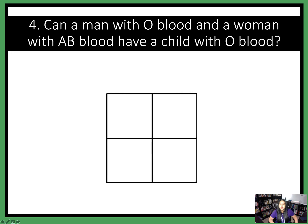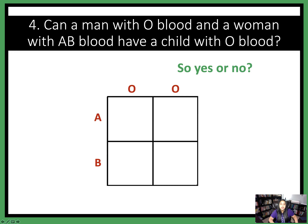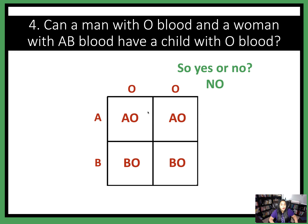Number four: can a man with O blood and a woman with AB blood have a child with O blood type? So let's go ahead and set up this problem. We've put the man with O blood type here and the woman with AB blood type here. Go ahead and cross this Punnett square and see what you get — can they have a child with O blood type or can they not? If you did it correctly, you should see there is no possible way this couple can have an O blood type child because their only options are AO and BO. So they have a 50% chance of having a baby with A blood type and a 50% chance of having a baby with B blood type.